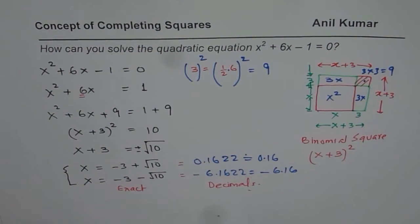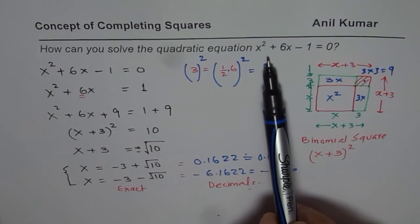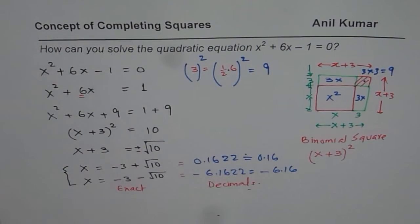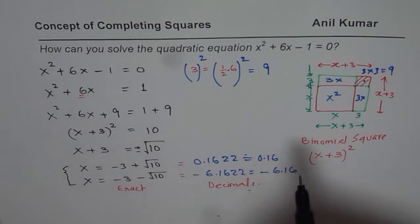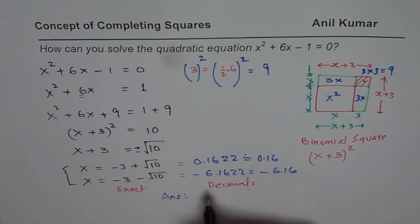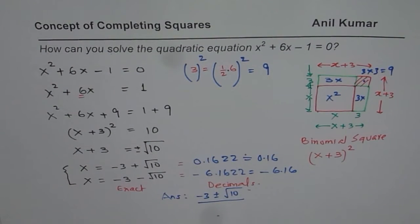But anyway, the concept here is, if you have a quadratic equation which cannot be written as a perfect square, you can make it a perfect square by completing squares. Concept is what I have shown here. Go through this video, understand the concept, and that solves such equations. So we can write down our answer. The answer for us is -3 ± √10. When we write like this, it is the exact answer. At times, you may be required to write answer in decimals, which could also be done using calculator. I hope that helps. Thank you, and all the best.